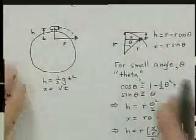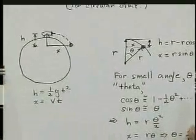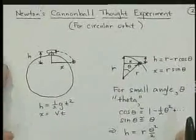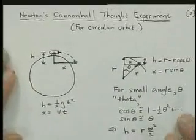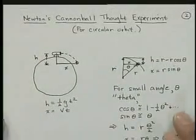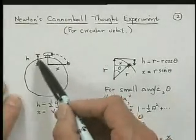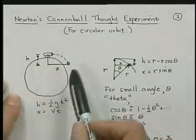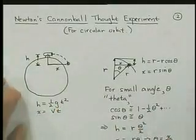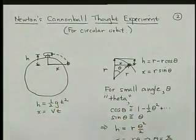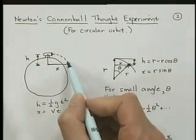Let's go ahead and take Newton's cannonball thought experiment a little further and calculate the circular orbit velocity that you need. So here we have a little circle representing the Earth, and a cannon firing a cannonball. And we have this little dash line, and here's the ball.